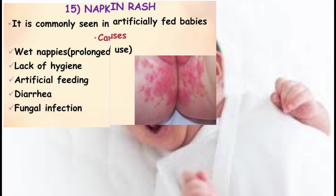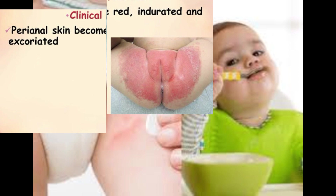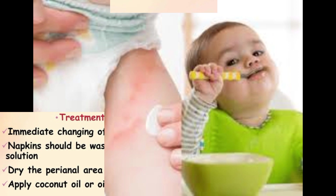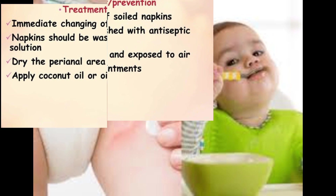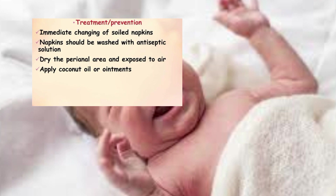Clinical features of napkin rash include perianal skin becoming red, indurated, and excoriated. Treatment and prevention includes immediate changing of soiled nappies; nappies should be washed with antiseptic solution, the perianal area dried and exposed to air, and coconut oil or ointment applied.